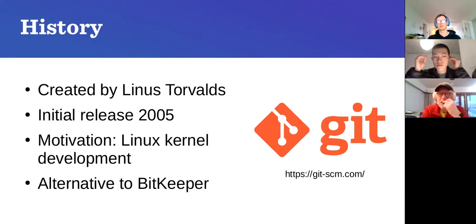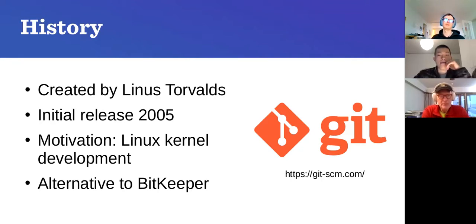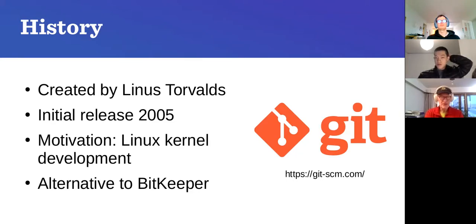Git was created by Linus Torvalds in 2005. The main motivation was to support the versioning of Linux kernel development. Before that, he and his team were using BitKeeper, but there was a clash about licensing — the community partly didn't like it because it was proprietary, and the company was unhappy because some users tried to reverse engineer it. So Linus created a new set of rules for a versioning system and they called it git. It was revolutionary and very different from anything available at the time.